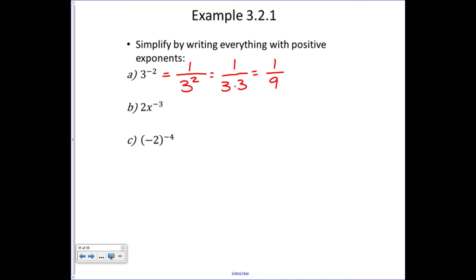If you have a negative exponent, move it across the fraction bar — to the bottom or top depending on where it's located — and make the exponent positive. Here we have two times x to the minus three. The important thing is that the two is not raised to that exponent; only the x moves. So the two stays, and x moves to the denominator with a positive exponent, giving us two over x cubed.